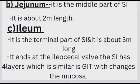The ileum ends at the ileocecal valve. The small intestine has four layers which are similar to the gastrointestinal tract, including the mucosa.